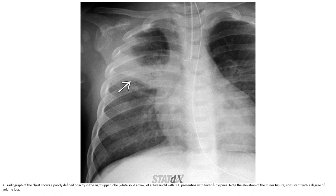This is an AP radiograph of the chest reported as positive in the right upper lobe of a one-year-old with sickle cell disease presenting with fever and hilar adenopathy, with evolution of minor pleural effusion presenting with a degree of volume loss.